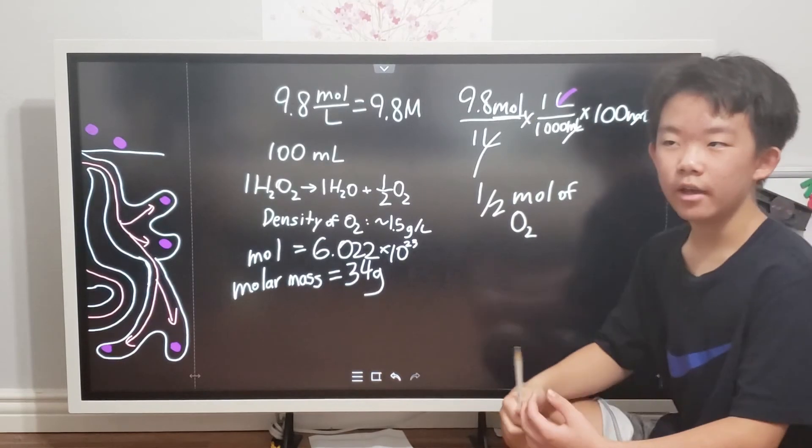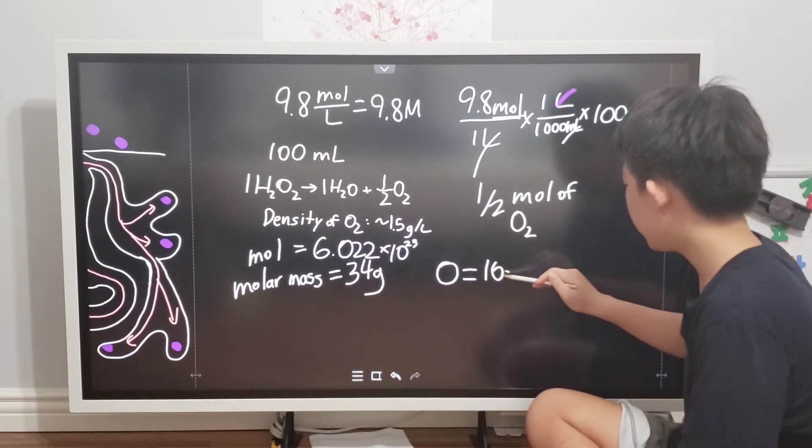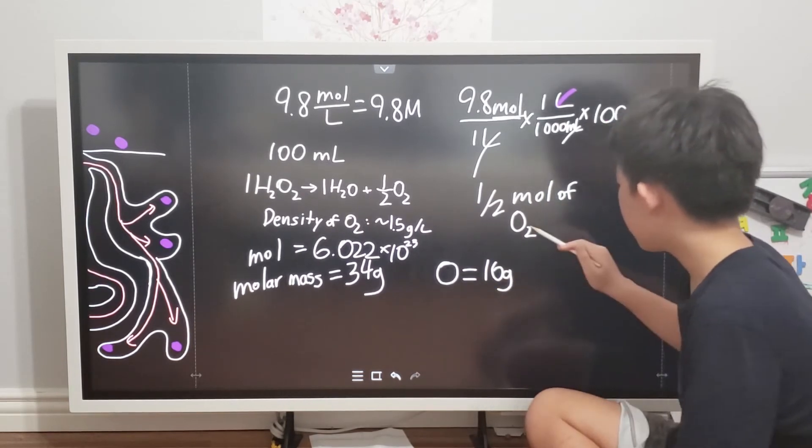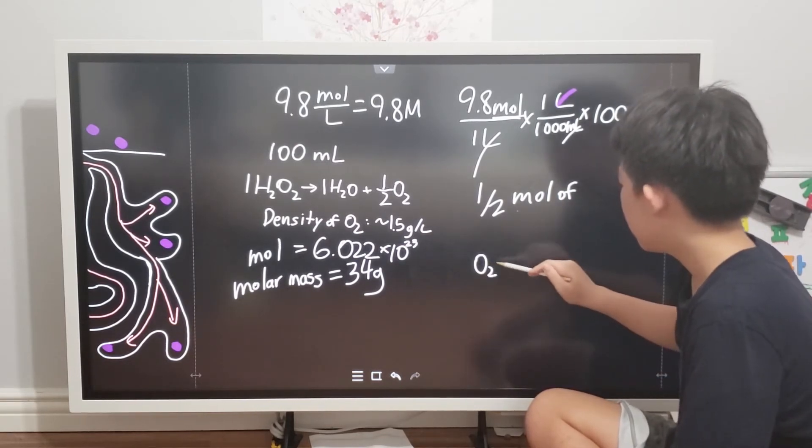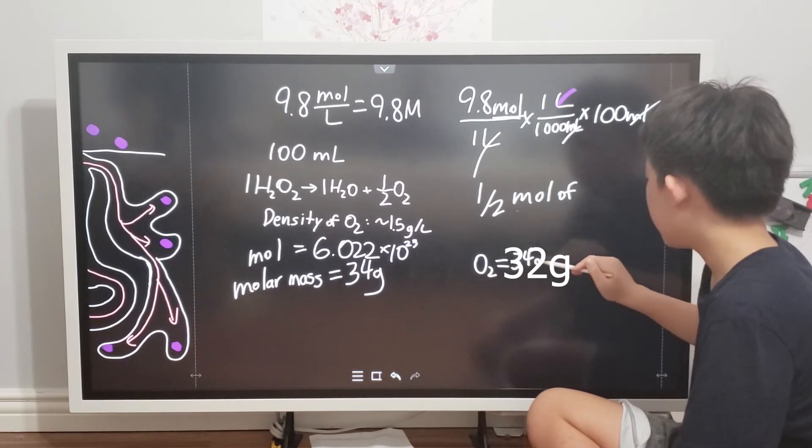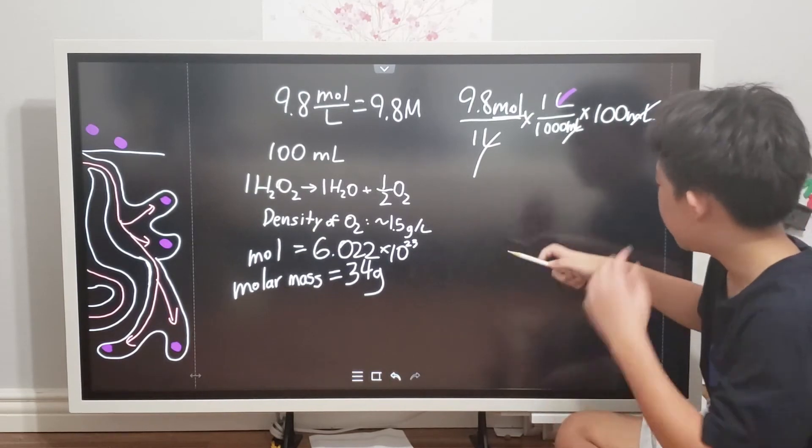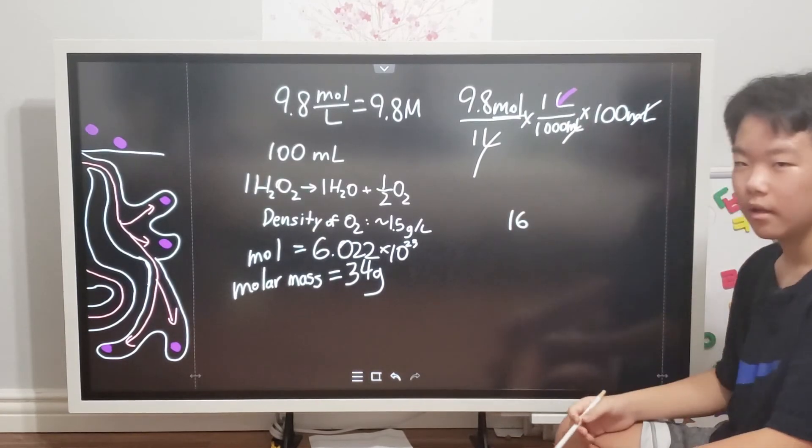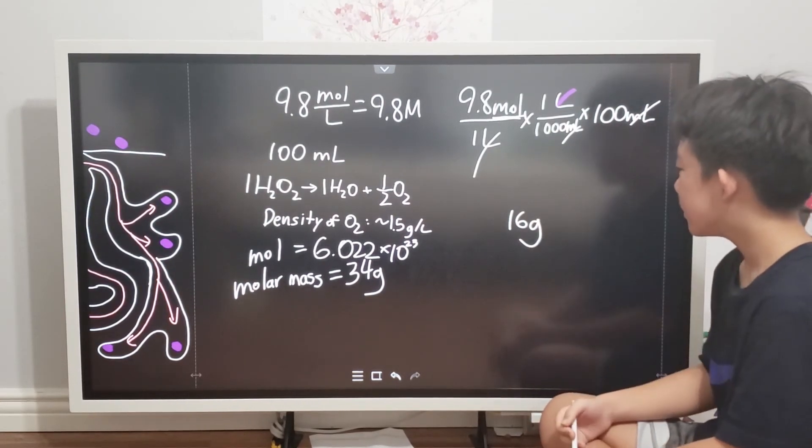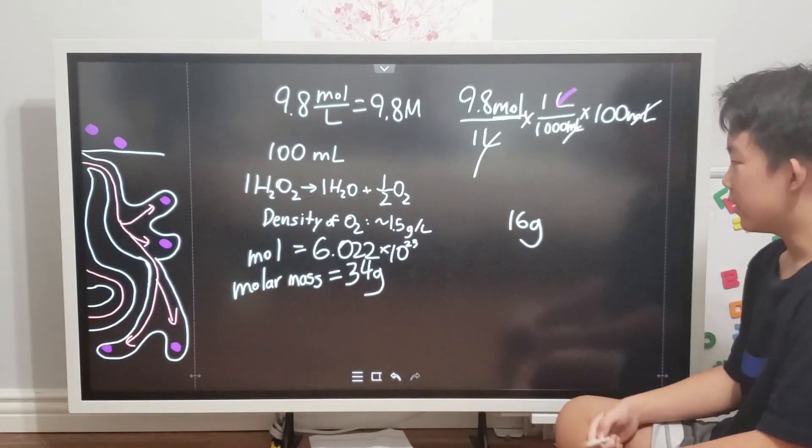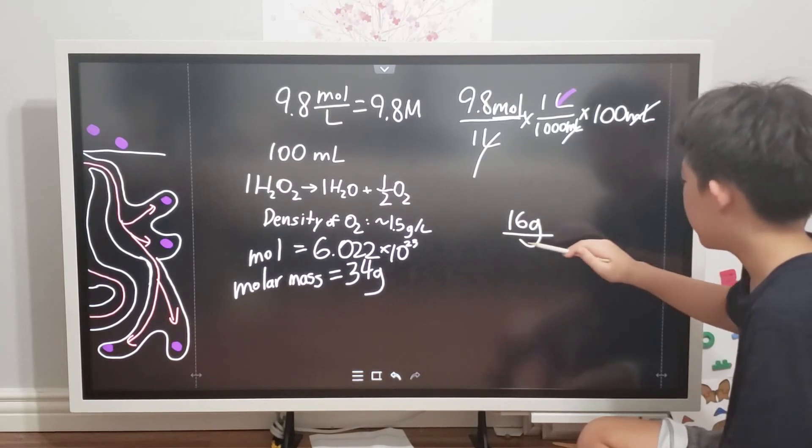Next off, we gotta calculate the molar mass of oxygen. One oxygen atom is 16 grams. So because oxygen has 2 oxygen atoms, O2's molar mass would be equal to 32 grams. And because we only have half a mole, we would divide it to form 16 grams of oxygen. Then we divide by the density of oxygen, which is 1.5 grams per liter. Because in division, when you divide in fractions, you have to change the numerator and denominator to form the reciprocal.